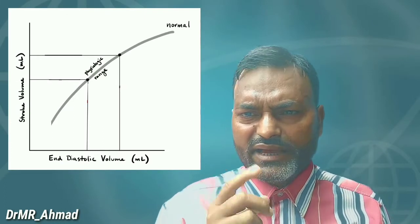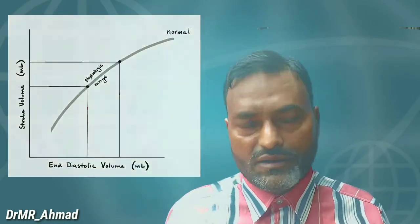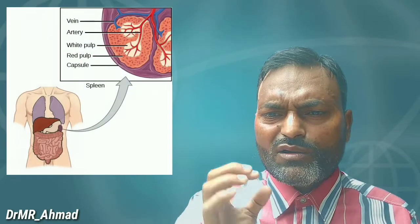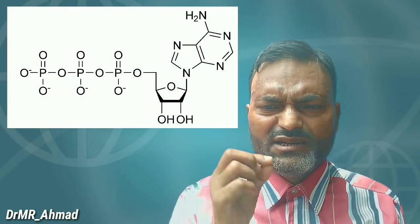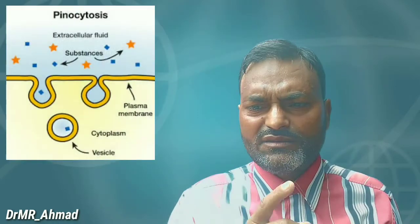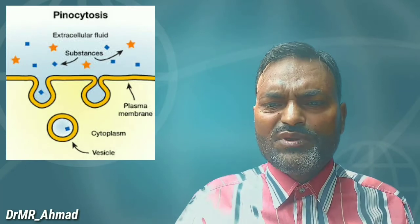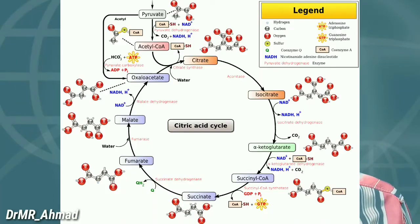Starling in 1918 discovered the law of the heart. Banting in 1922 isolated the hormone insulin, and Barcroft in 1925 explained the function of the spleen. Lohmann in 1929 discovered ATP. Lewis in 1931 gave the concept of pinocytosis. Krebs in 1937 discovered the Krebs cycle.